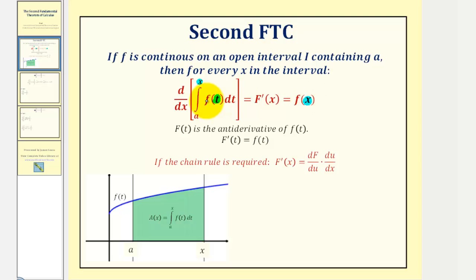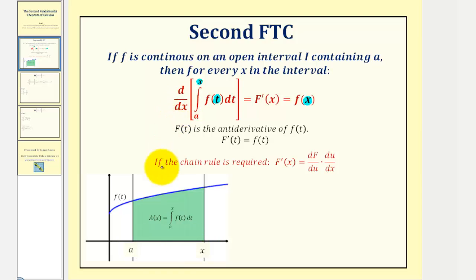We can think of this integral as the accumulation function A of x, where A of x gives us the area of the shaded region where a is a constant and x is any value to the right of a. So the derivative with respect to x of this accumulation function is just f of x, the integrand function evaluated at x.